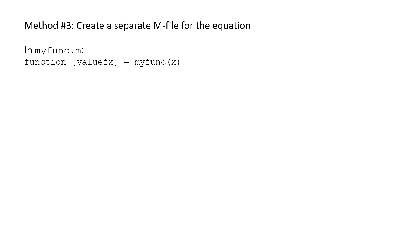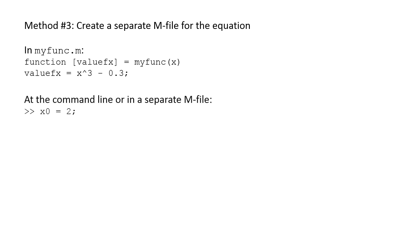You can also calculate the function in a separate m-file. Here we create an m-file named myfunc.m. The first line of the m-file is: function fx = myfunc(x). Next, we type the expression for the function, x^3 - 0.3, and set it equal to fx. At the command line or in a separate m-file, we can calculate the root of myfunc by first setting x0 equal to 2, then typing: x = fzero('myfunc', x0).